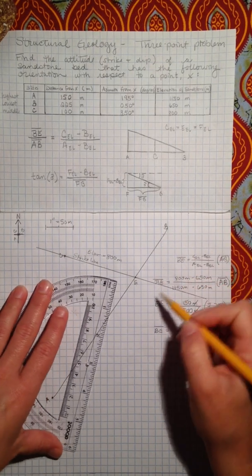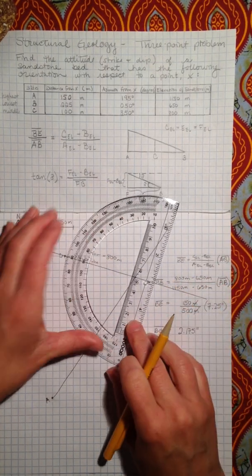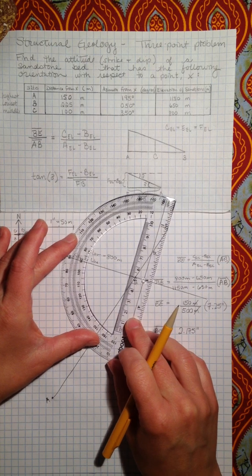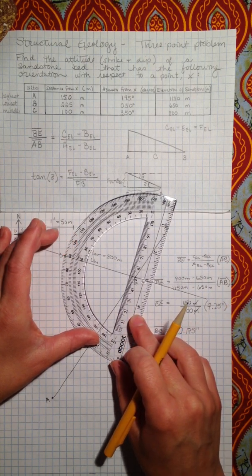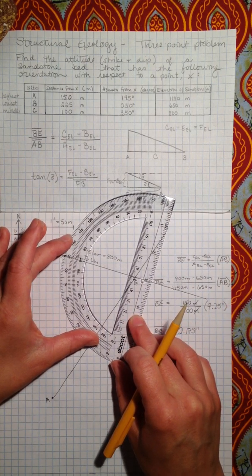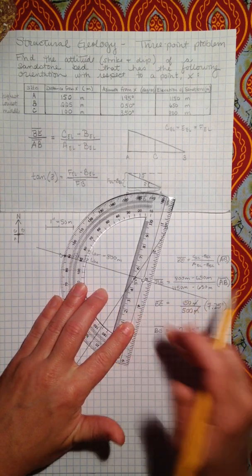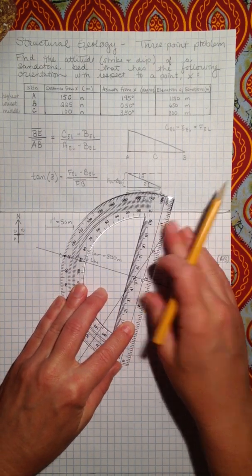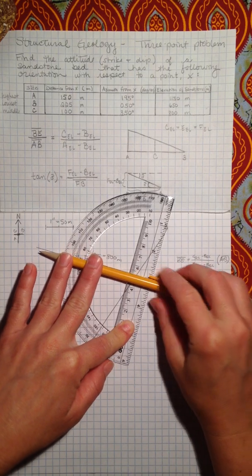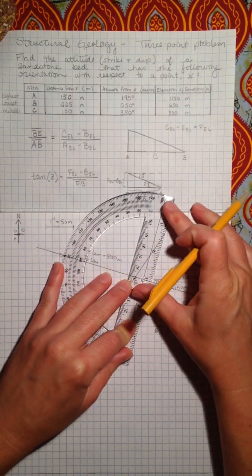And so we know that dip is always perpendicular to strike. So what we're going to do is set up our, here I'm using my protractor to do it and basically making sure that my protractor is set up exactly perpendicular to this line and going through B.